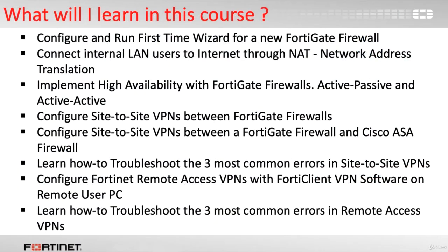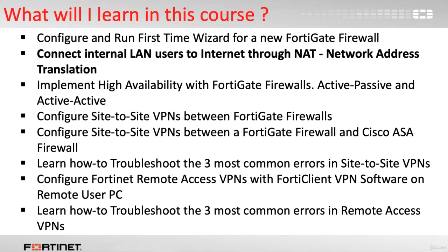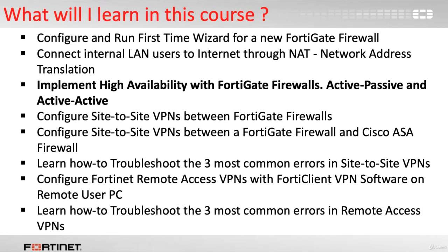I want to make sure you and I have the same expectations about this course, so let's see exactly what topics are covered in this training bundle. We will start by configuring and running the first-time wizard for a new FortiGate Firewall, then connect internal LAN users to the internet through NAT — Network Address Translation. We will implement high availability with FortiGate Firewalls; active-passive and active-active scenarios are included.